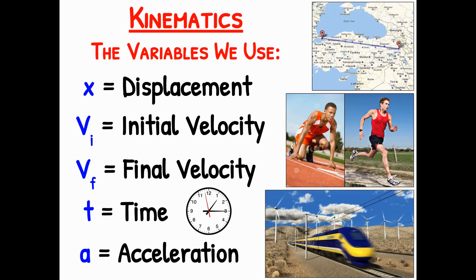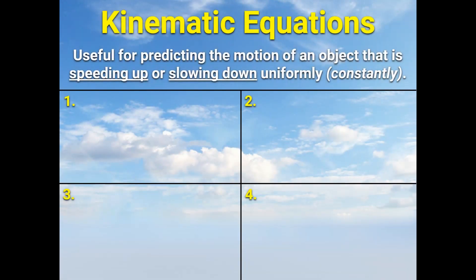So now that we know the five variables that are involved in kinematics, what do we do with them? You'll primarily be using them in what we call kinematic equations. Kinematic basically just means motion. So a kinematic equation would be an equation that you use to predict motion. Specifically, these four equations will be useful for predicting the motion of an object that is either speeding up or slowing down uniformly. Uniformly is a fancy way of saying constantly or always the same way.